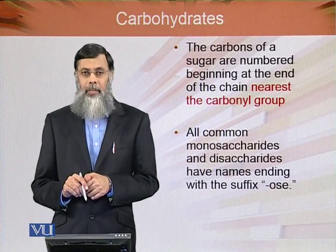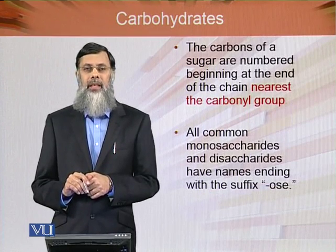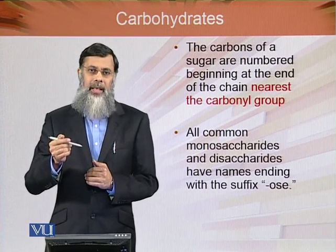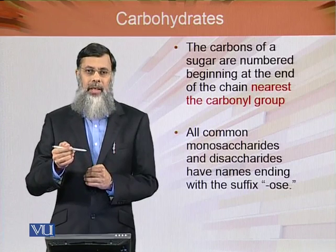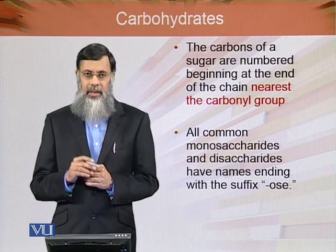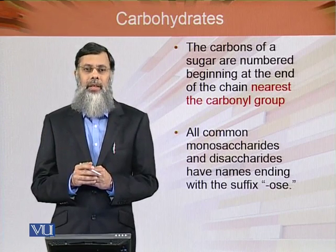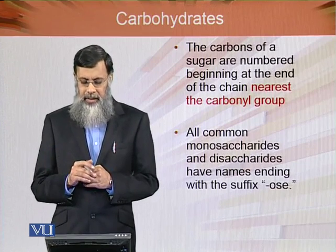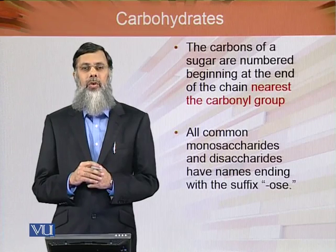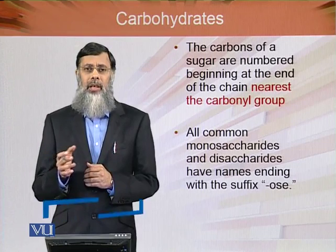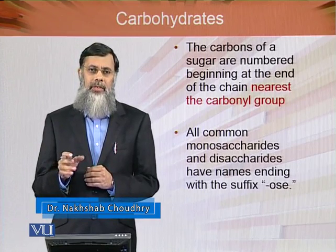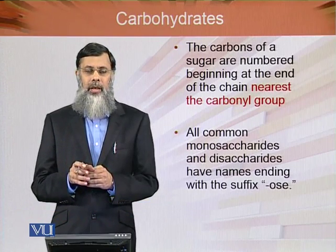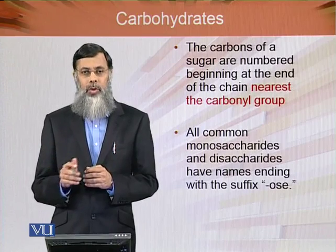The carbons of a sugar are numbered beginning at the end of the chain nearest the carbonyl group. All monosaccharides and disaccharides have names ending with the suffix '-ose,' though there are exceptions — for example, glyceraldehyde is an aldose monosaccharide but does not end in '-ose.'